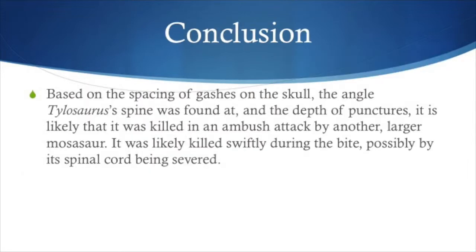Due to the depth of the punctures in Tylosaurus's skull and the spacing and shape of the gashes, it is likely that it was attacked by another, larger Mosasaur. This attack is likely what caused its death, possibly due to the severance of its spine. Its death could also have resulted from its cranial cavity being crushed, something that only another Mosasaur would have been capable of.